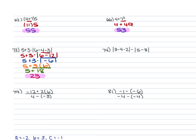For 74, we have |3 − 4 × 2| − |5 − 8|. Inside the first absolute value, do multiplication first: 4 × 2 = 8, giving |3 − 8| − |5 − 8|. Then 3 − 8 = −5 and 5 − 8 = −3. The absolute value of −5 is 5 and of −3 is 3. So 5 − 3 = 2.